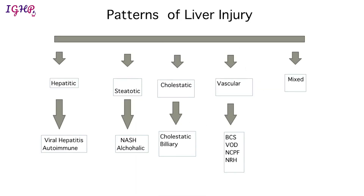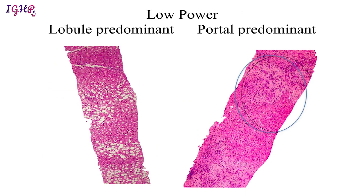We will now move forward to the different patterns of liver injury. The patterns of liver injury can be broadly categorized as: a hepatitic pattern involving inflammation of the portal tract and damage to hepatocytes, including viral or autoimmune hepatitis; a steatotic pattern involving accumulation of fat within liver cells, including non-alcoholic or alcoholic steatohepatitis; a cholestatic pattern involving accumulation of bile within the liver; a vascular pattern affecting inflow or outflow tracts; and a mixed pattern, usually seen with drug-induced liver injury.